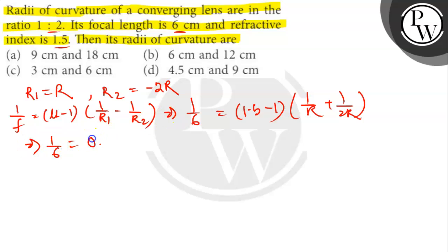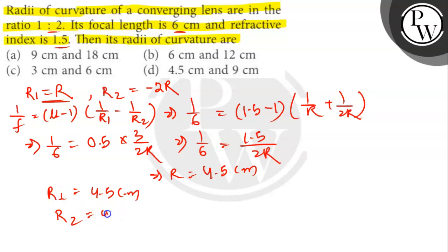Simplifying this equation, we get R equals 4.5 cm. So R1 is 4.5 cm. According to this, R2 is 4.5 times 2, that will be 9 cm. So option D is the correct answer. Thank you.